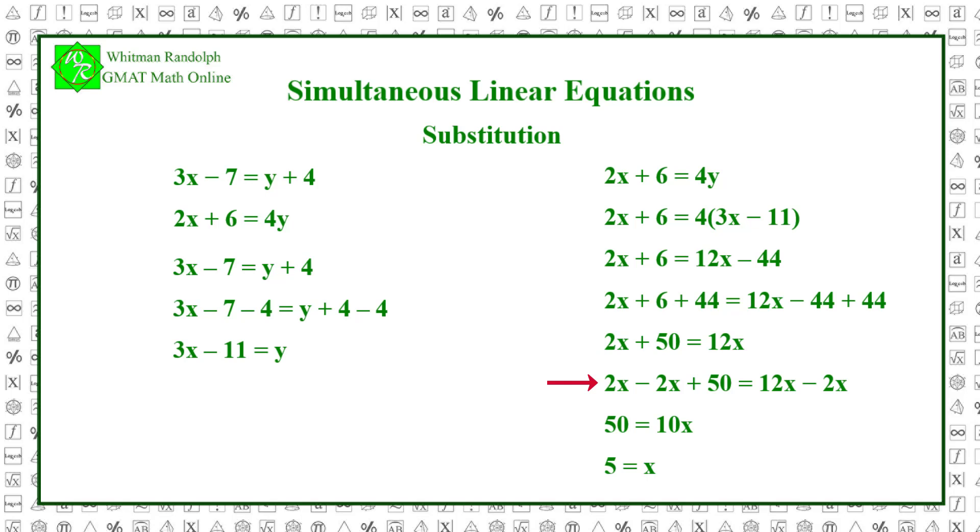2x minus 2x plus 50 equals 12x minus 2x. So 50 equals 10x and 5 equals x. Now we have the value for x, 5.